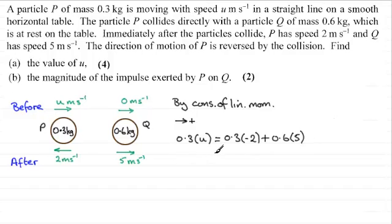And if you work out the right hand side here it turns out to be equal to 3.4. So to get U all I need to do is divide both sides by 0.3. And if you do that you get exactly that U equals 8 meters per second. So that's part A then.